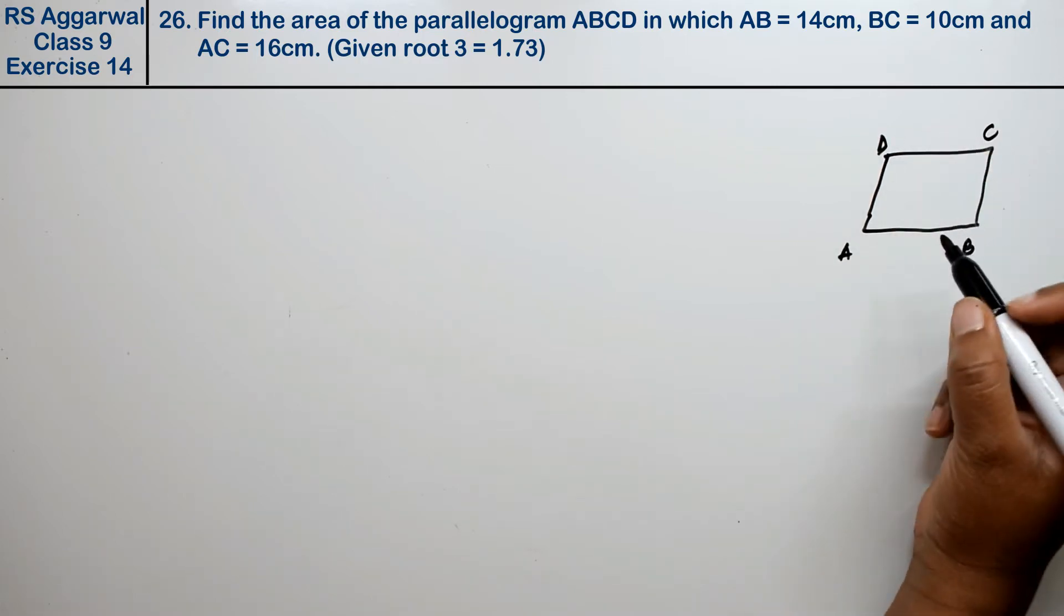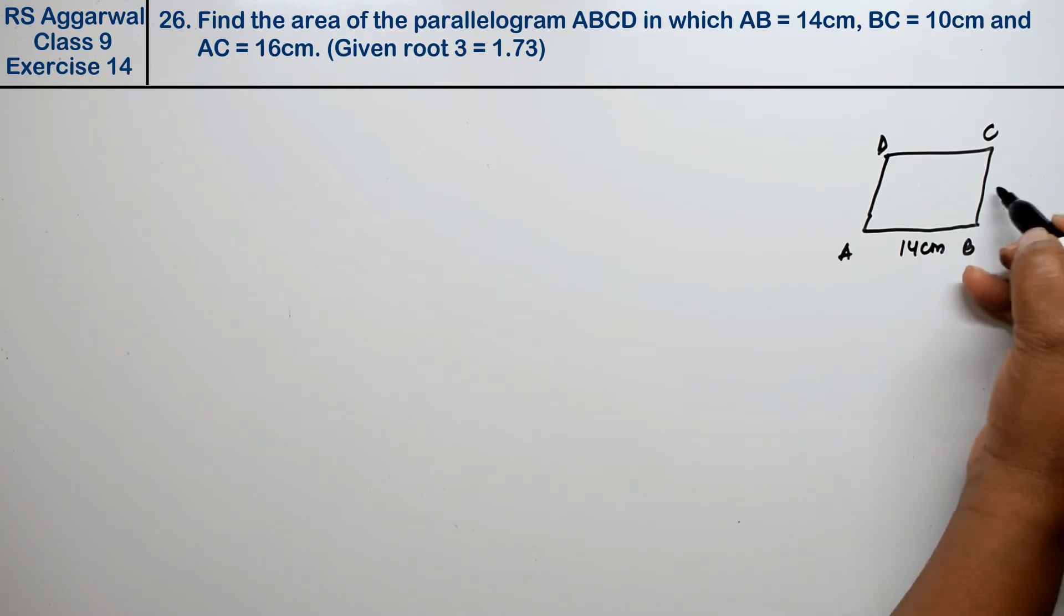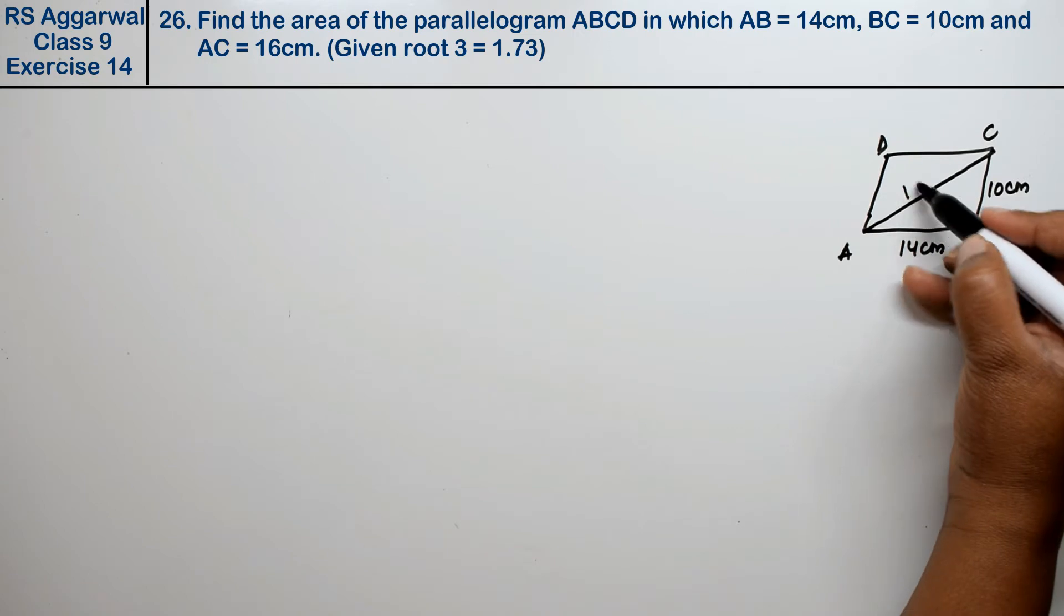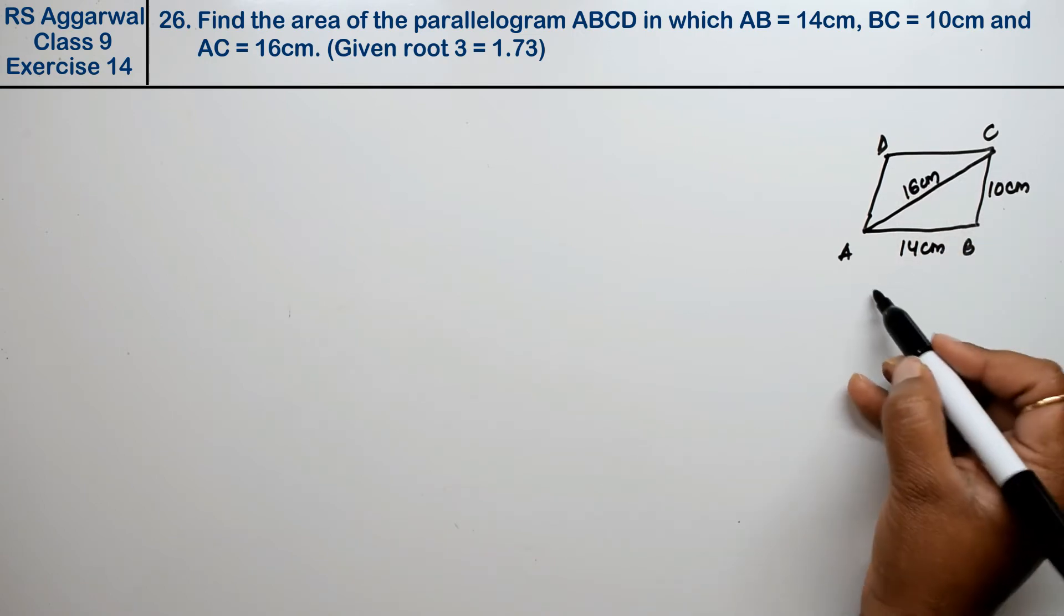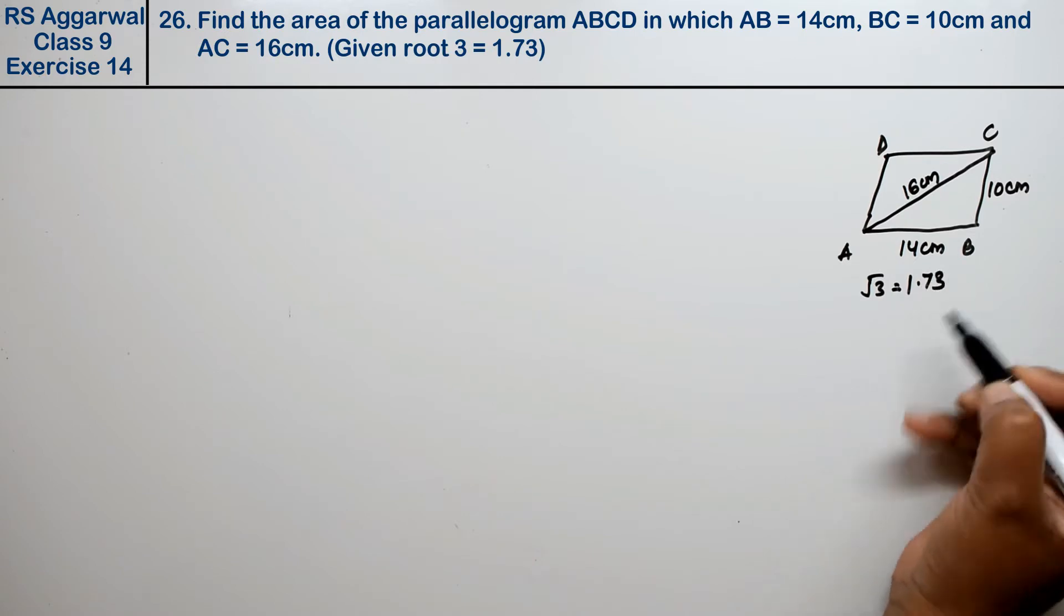In which AB is 14 cm, BC is 10 cm, and AC is 16 cm, and the value of root 3 is 1.73.